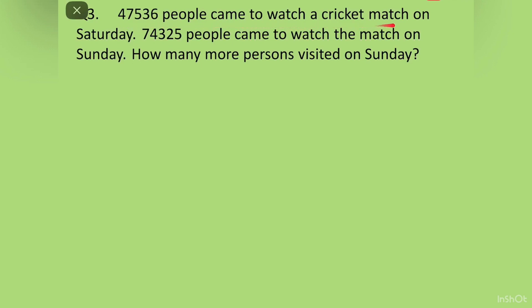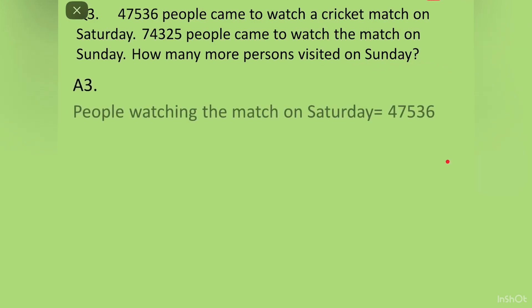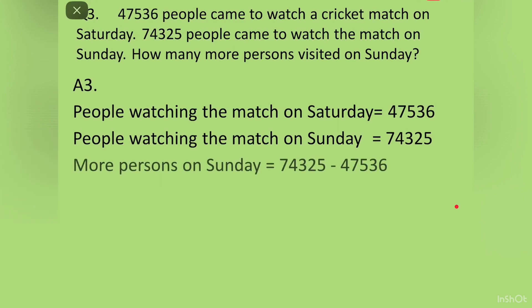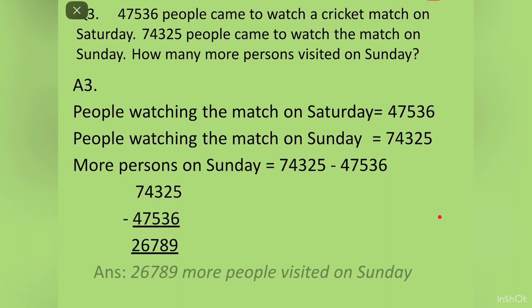Question 3: 47,536 people came to watch a cricket match on Saturday. 74,325 people came on Sunday. How many more persons visited on Sunday? We write: people watching on Saturday = 47,536, people watching on Sunday = 74,325. We subtract: more persons on Sunday = 74,325 minus 47,536. We write them one below the other, find the answer: 26,789 more people visited on Sunday.